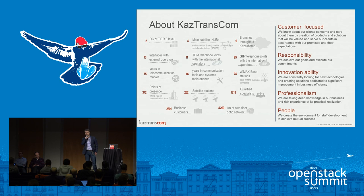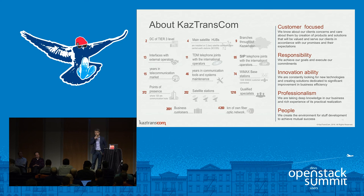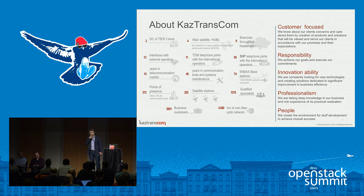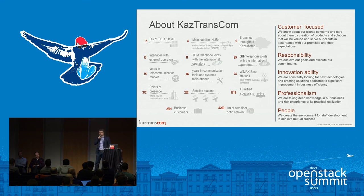In our work, we have four main principles, and all of these principles are our strongest side: customer focus — we work for our customer; responsibility; innovation ability; and professionalism. When we found a solution for our cloud, we needed to find a solution who matches these requirements. In our market, two big companies worked to match these requirements: Cisco and Red Hat. These companies matched our requirements because they have a relationship and created a Cisco Validated Design between Cisco and Red Hat, which was very important for us.